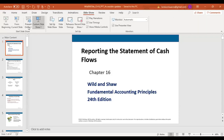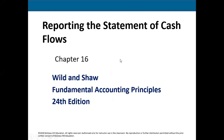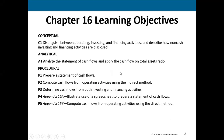Today we'll be distinguishing between operating, investing, and financing activities — what exactly are they? There's also something called non-cash investing and financing activities. We're going to go through the procedural part and actually prepare a statement of cash flows, compute cash flows from operating activities using the indirect method, and determine cash flows from both investing and financing activities. We're not going to cover Appendix A or B — you're welcome to look at them, but we're not responsible for them.